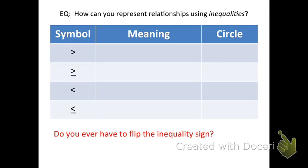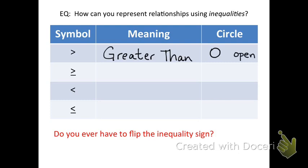Here are the four inequality signs — you see them on the left column. The first one is greater than. When you graph inequalities, you're going to have to determine what type of circle. You have two options: an open circle or a closed circle, based on what type of symbol you're using. Greater than uses an open circle.